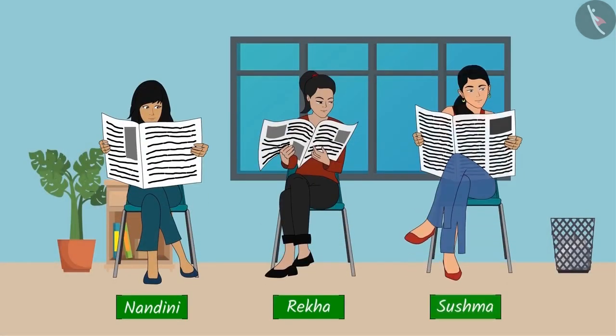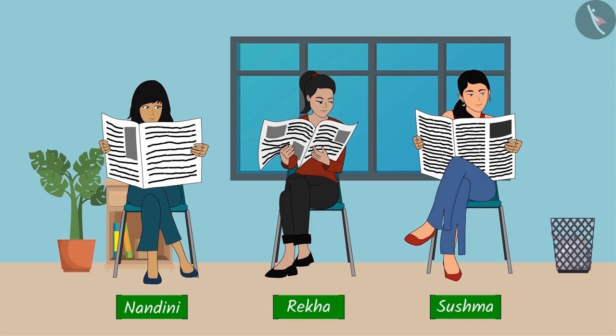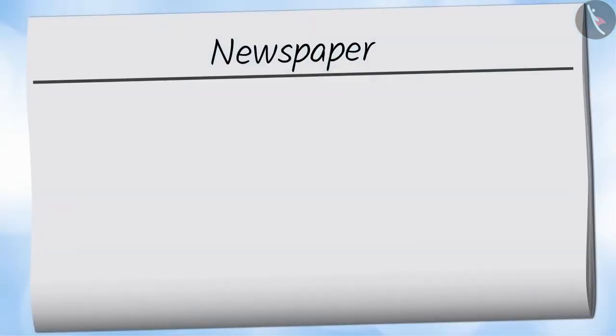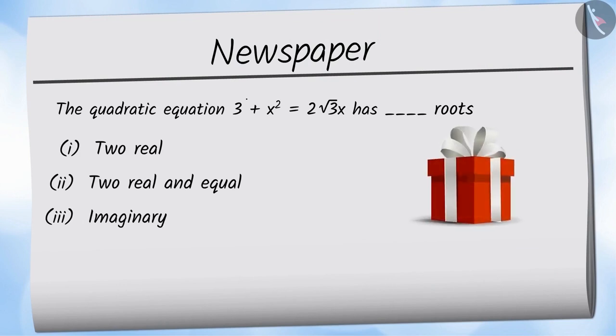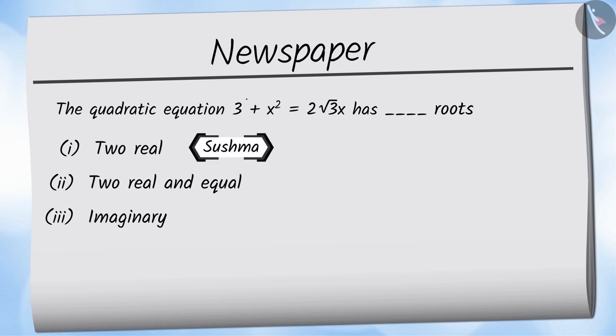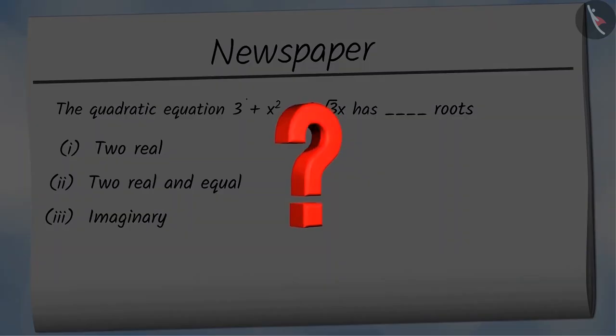Nandini, Rekha and Sushma saw a question given in the newspaper, with a note saying anybody solving the question correctly will win a reward. Sushma, Rekha and Nandini select options 1, 2 and 3 respectively. Can you tell whose answer is correct and why?